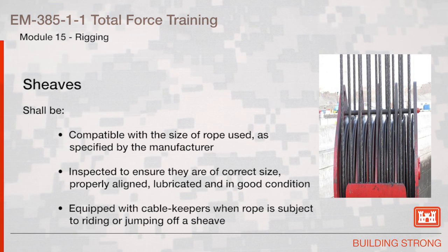Sheaves shall be compatible with the size of the rope used as specified by the manufacturer, inspected to ensure they are of correct size, properly aligned, lubricated, and in good condition. They shall be equipped with cable keepers when the rope is subject to riding or jumping off of the sheave.